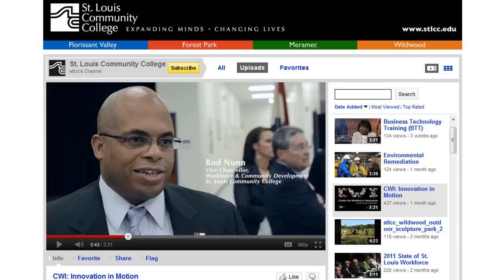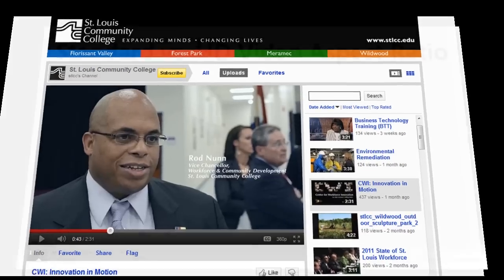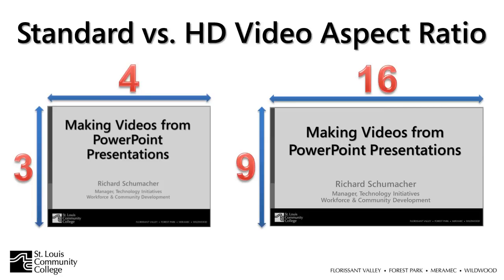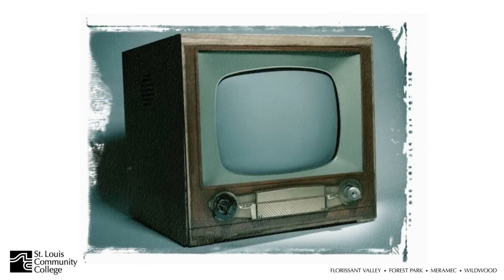Over 2 billion videos are viewed each day on YouTube and 100 million of those views are through YouTube mobile. An important difference of HD video is the aspect ratio — the proportion of the screen width to the height. For standard video, this ratio is 4 to 3. HD has changed this to a widescreen 16 by 9 format, more like the proportions of a movie theater screen. Although you can publish videos with the standard 4 to 3 ratio, doing so gives the impression you are publishing vintage content, or that you are just not keeping up with the times.